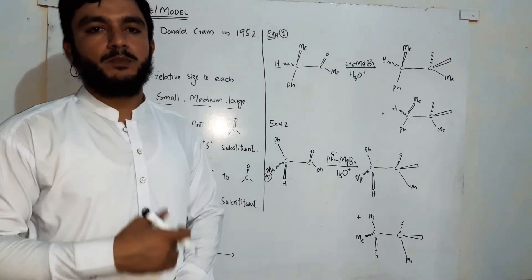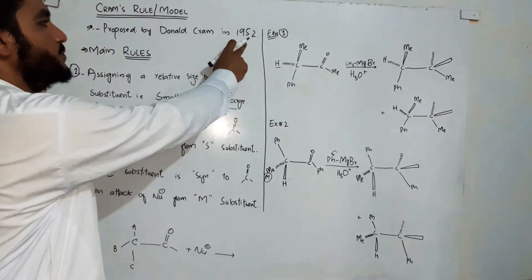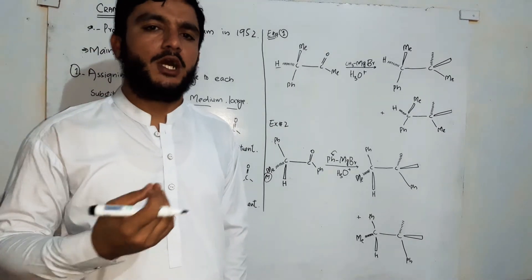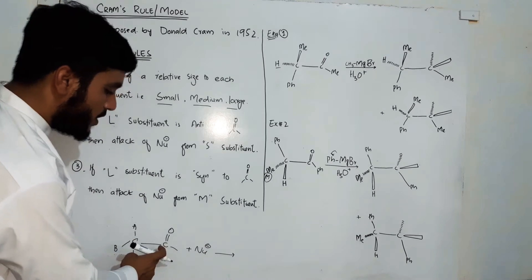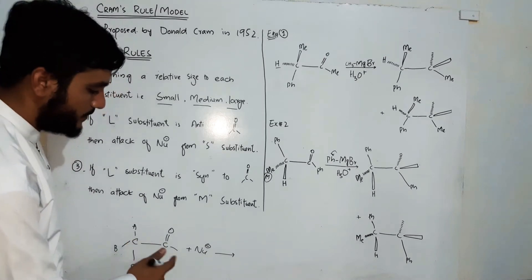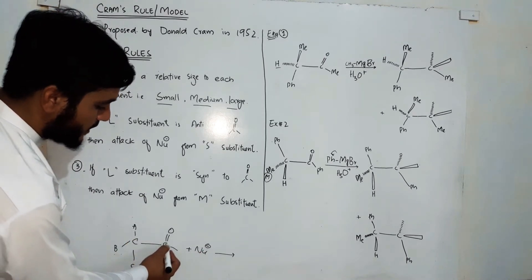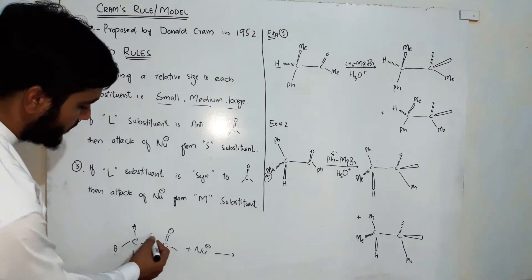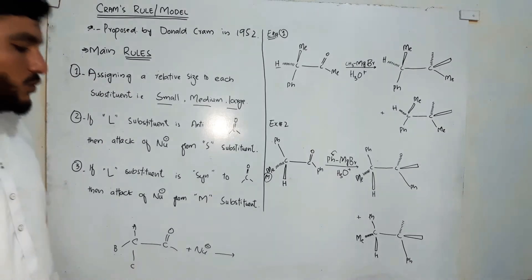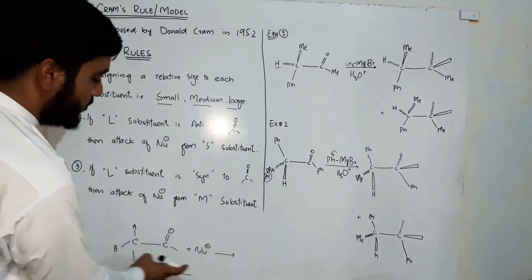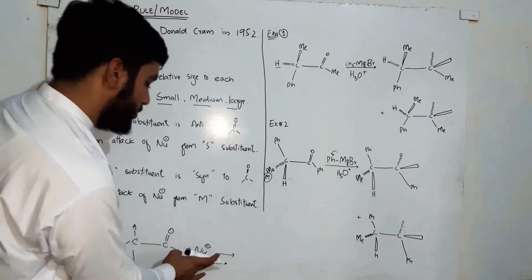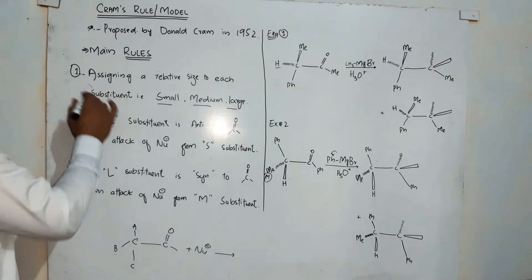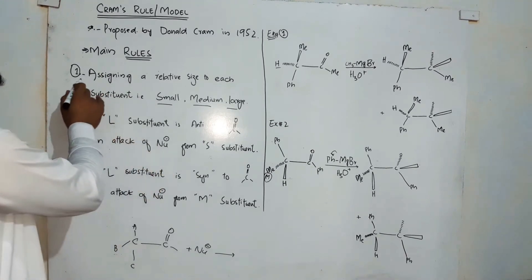Cram's rule was proposed by Donald Cram in 1952. This rule is about the stereochemistry of nucleophilic addition to a carbonyl carbon which has an alpha chiral carbon. A chiral carbon is one which has four different groups attached to it. These rules describe the stereochemistry of this nucleophilic addition.